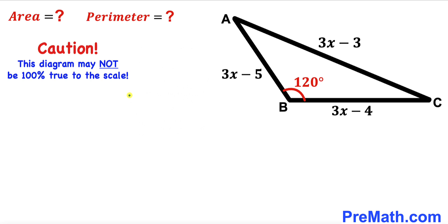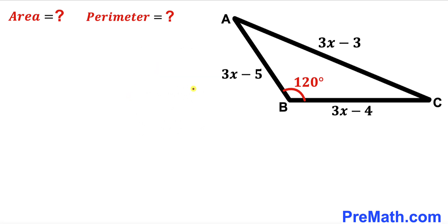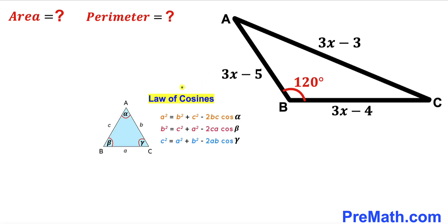Please keep in mind that this figure may not be 100% true to scale. Before we can calculate the area and the perimeter, we must find the value of x first. Let's recall the law of cosines for triangle ABC, whose side lengths are lowercase a, b, and c, and whose angles are alpha, beta, and gamma respectively. We are going to apply the law of cosines on this triangle.